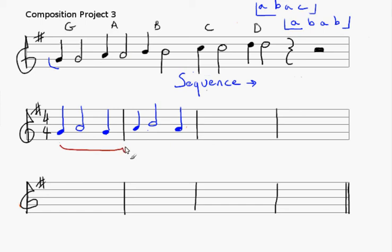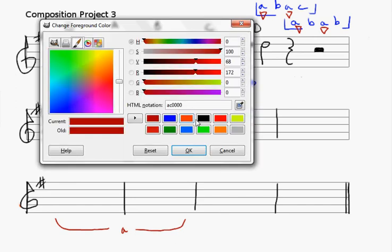And we're going to do the exact same thing. In order for this to stay section A, we have to do the exact same thing here and the exact same thing here. First two measures, second two measures, fifth and sixth measures, and then seventh and eighth measures. So these two are going to be exactly the same.